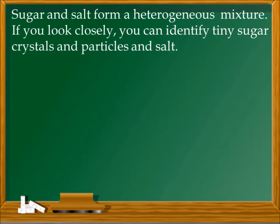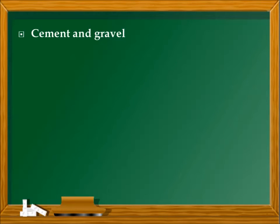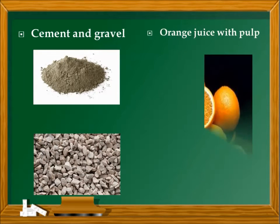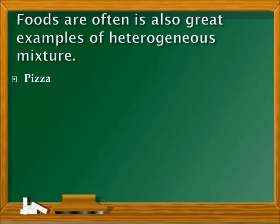Sugar and salt are an example of a heterogeneous mixture — if you look closely, you can identify tiny sugar crystals and particles of salt. Cement and gravel are also examples of a heterogeneous mixture. Foods are often a great example of a heterogeneous mixture, like a pizza.